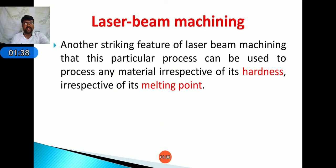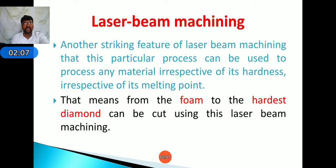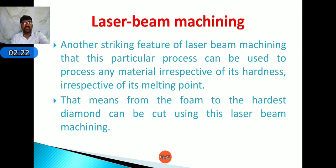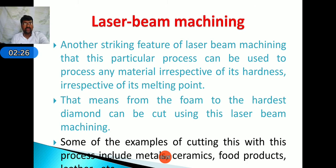Another striking feature of laser beam machining is that this process can be used to machine any material regardless of its hardness or melting point — from soft to hard material. That means from foam, which is a very soft material, to the hardest diamond. Examples include metals, ceramics, food products, etc.